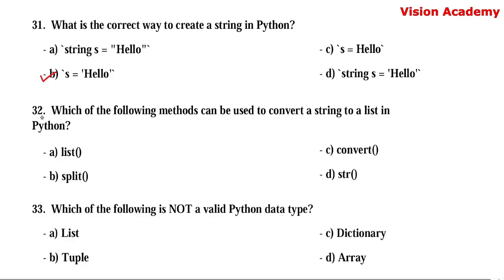Question number 32. Which of the following methods can be used to convert a string to a list in Python? Option A: list. Option B: split. Option C: convert. Option D: str. Here, option B — split — is the right answer.